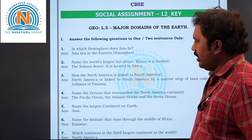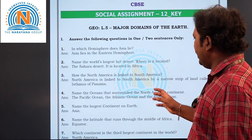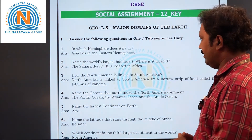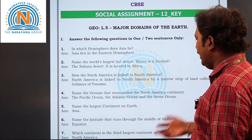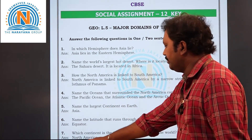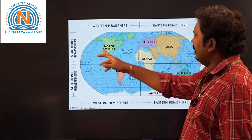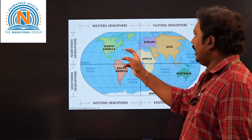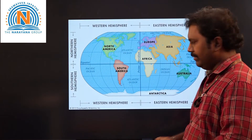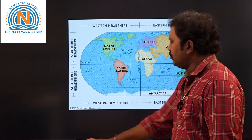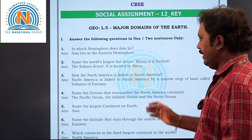Now let's take the fourth question: name the oceans that surround the North American continent. The answer is the Pacific Ocean, Atlantic Ocean, and Arctic Ocean. Let us have a look at the map. This is North America — on this side is the Pacific Ocean, and on the other side the Atlantic Ocean and Arctic Ocean.